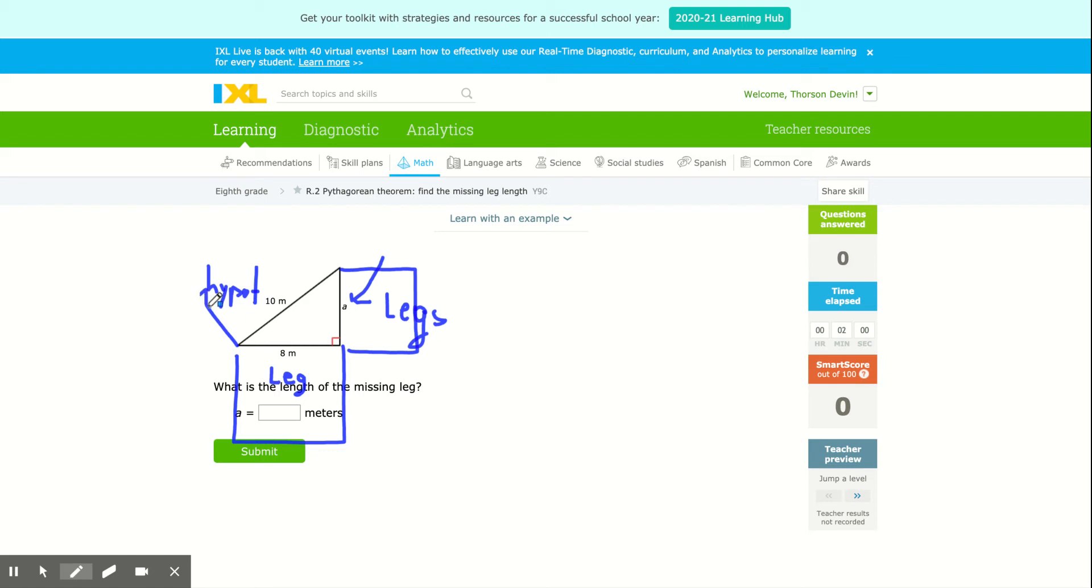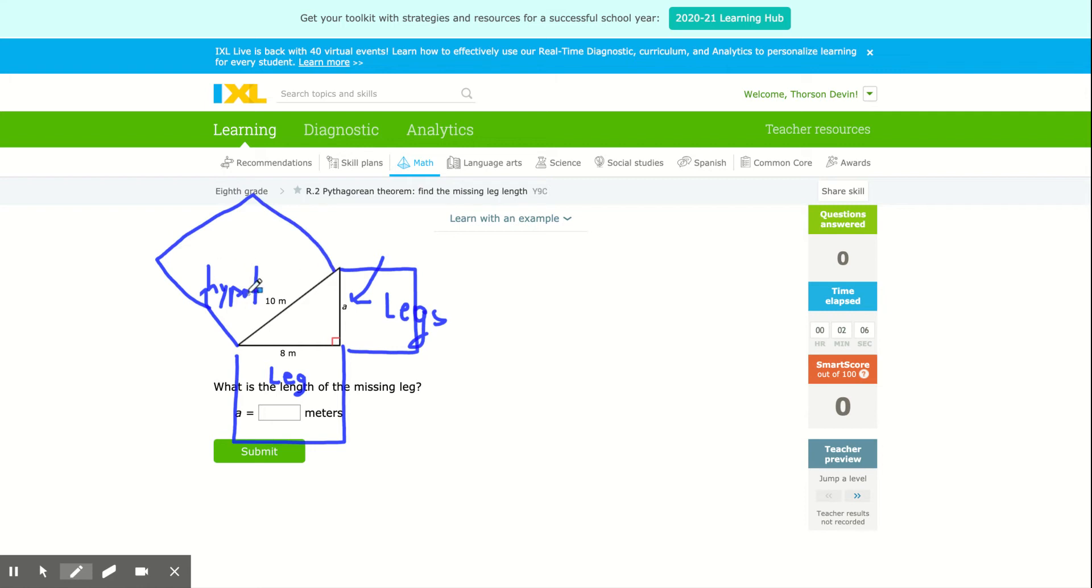And just remember that the two smaller squares, their area adds up to the larger square. So what I would do is, I notice I have the larger side, its length is 10, which means this side is 10. I do 10 times 10 to find the area of the larger square, which is 100.